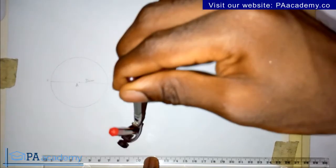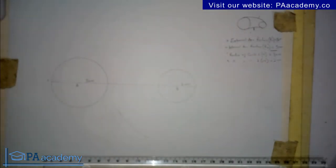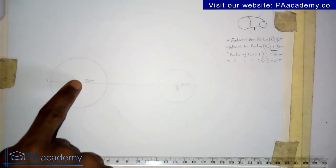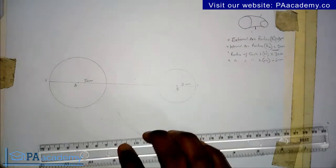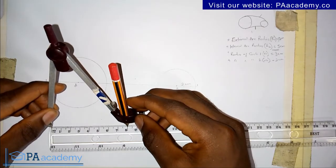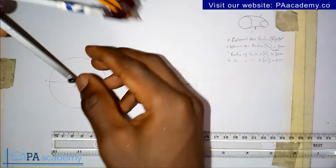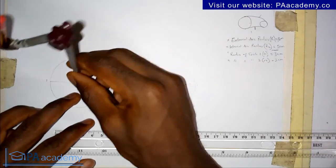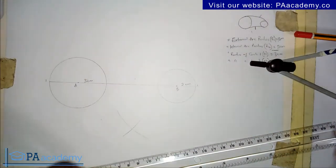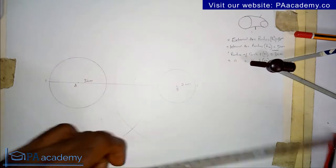So we measure 7 cm on the compass, place it at the center of circle 2 — point B — and draw an arc. Then we measure 8 cm, place the compass at the center of circle 1 — point A — and draw an arc to cut the first arc. We note the point of intersection and call it point C.